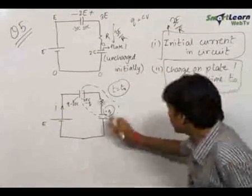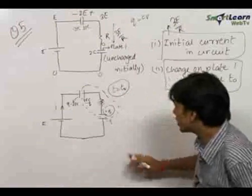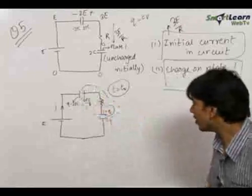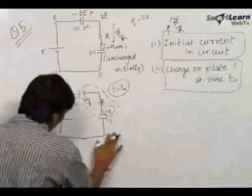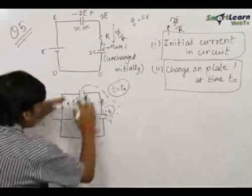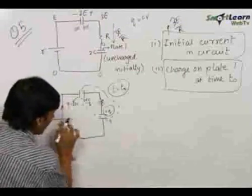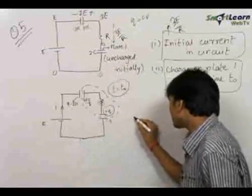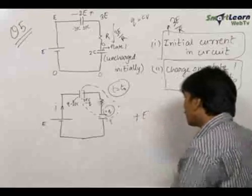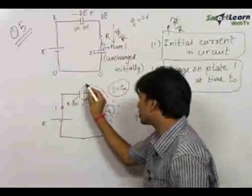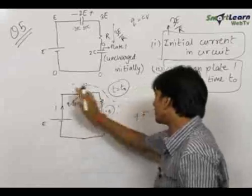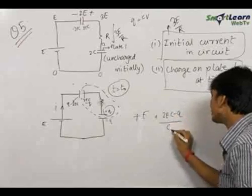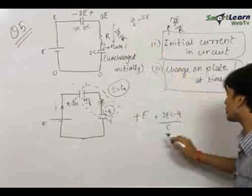To write an equation, we apply Kirchhoff's Voltage Law in this loop. The total potential increase is equal to the total potential drop in one complete loop. Starting from this point and returning to it: on going from here to here there is a rise in potential of E. Then there is again a potential increase of (2EC minus q)/C, because the potential drop equals q/C.